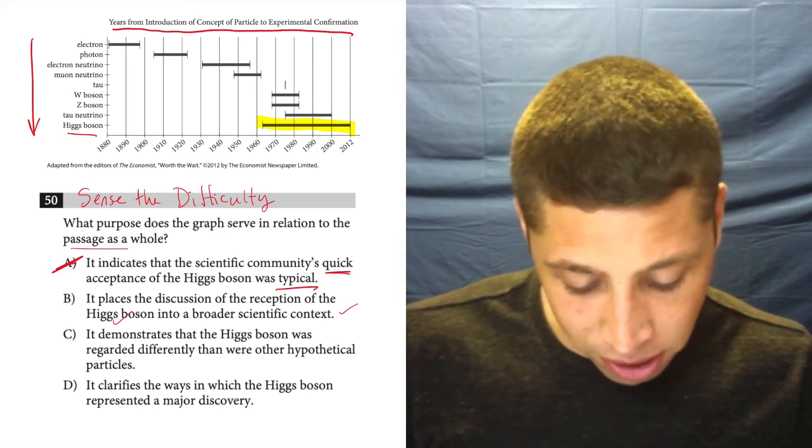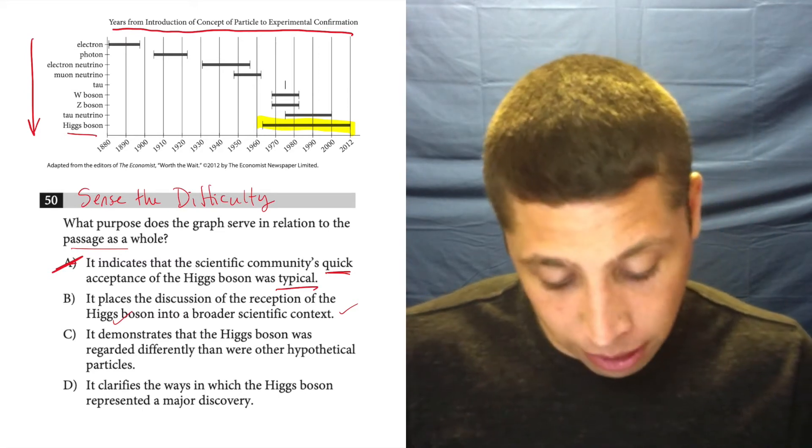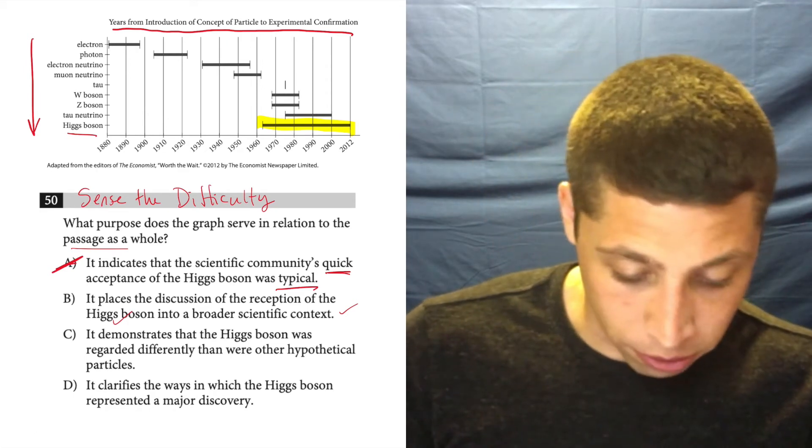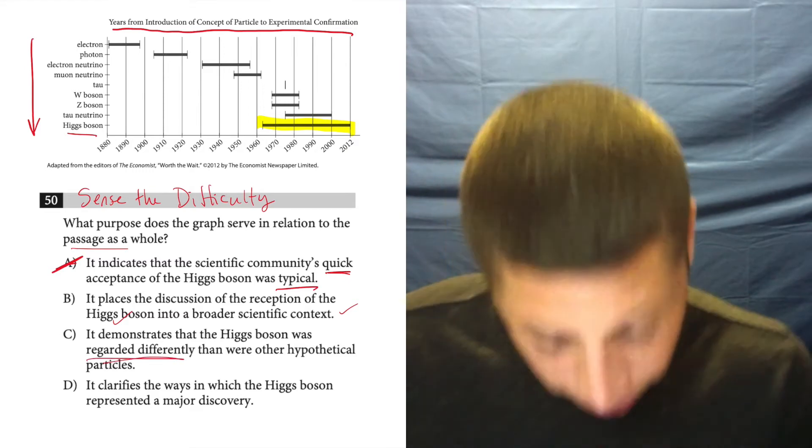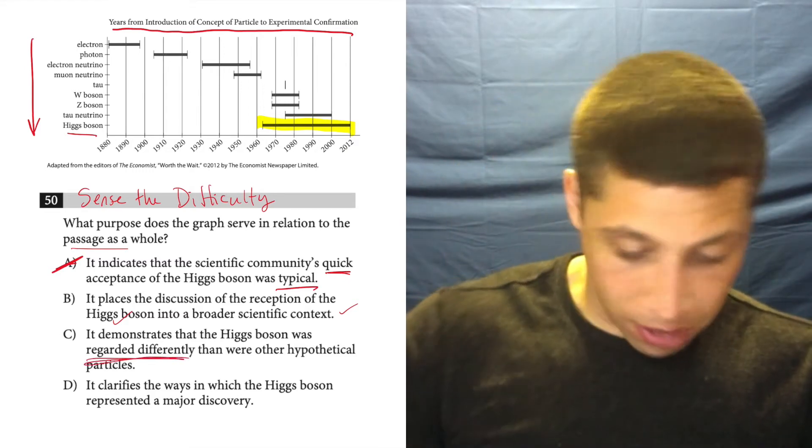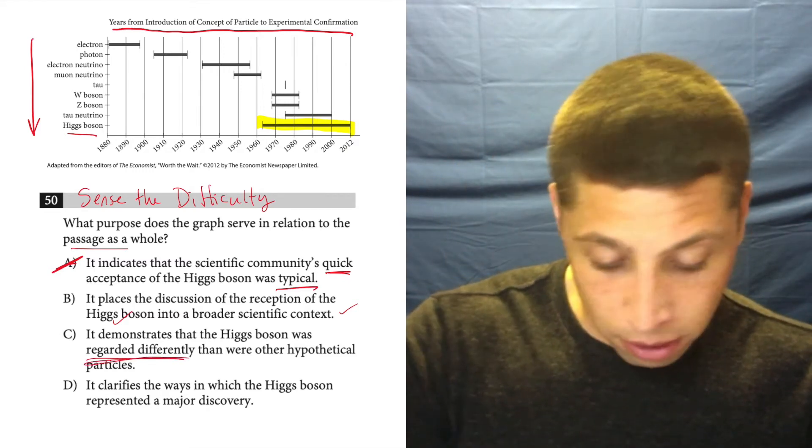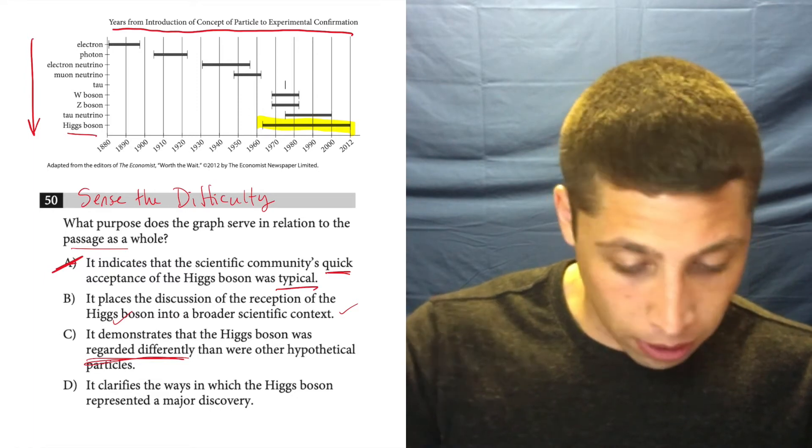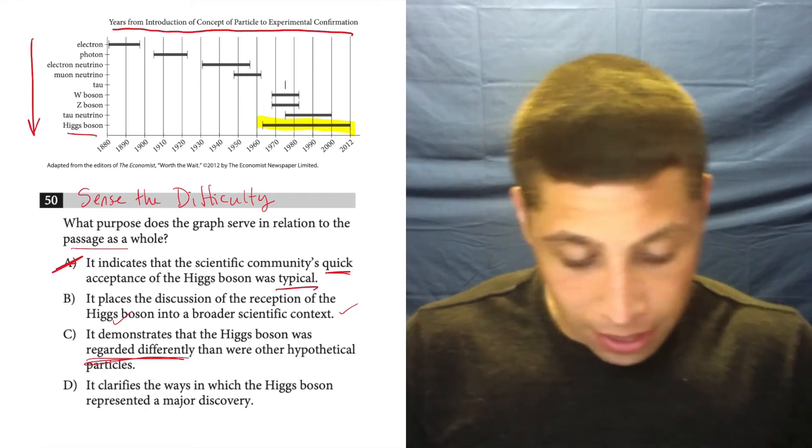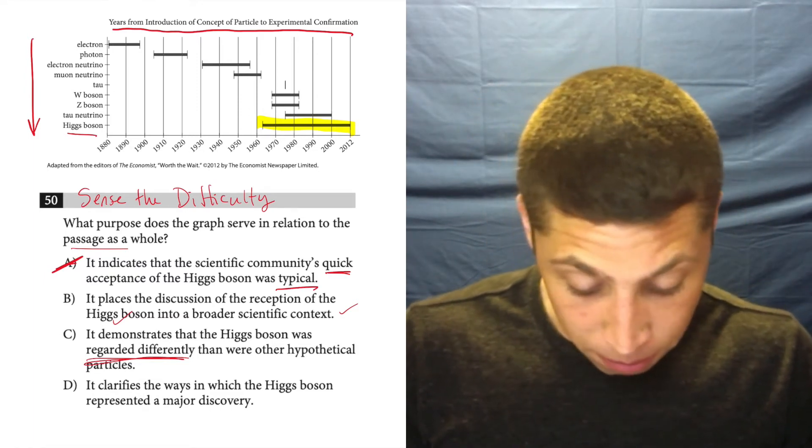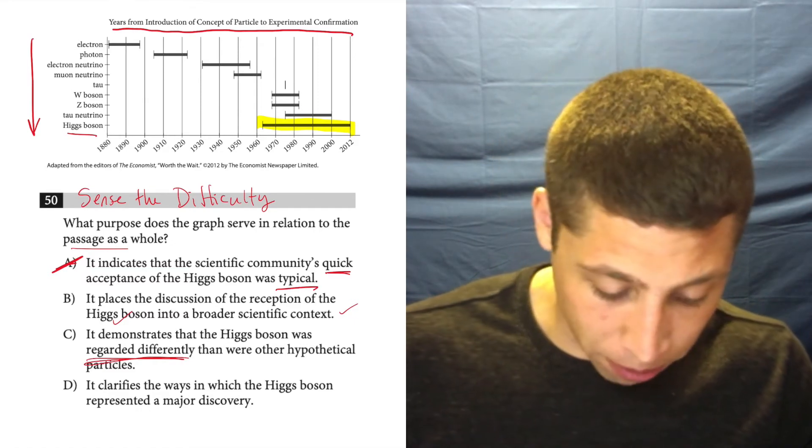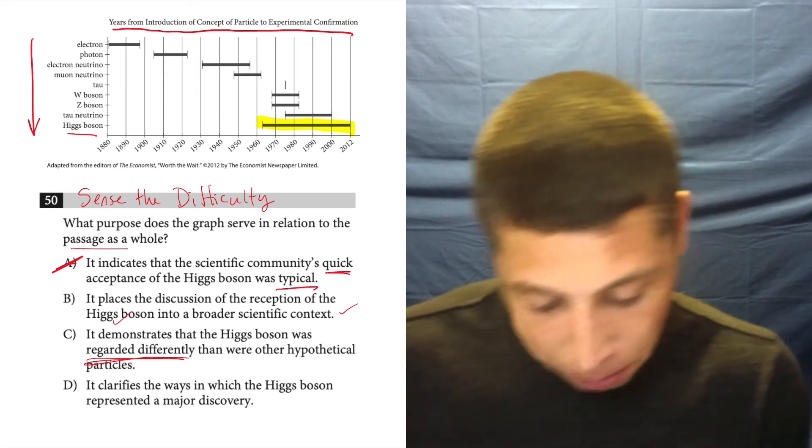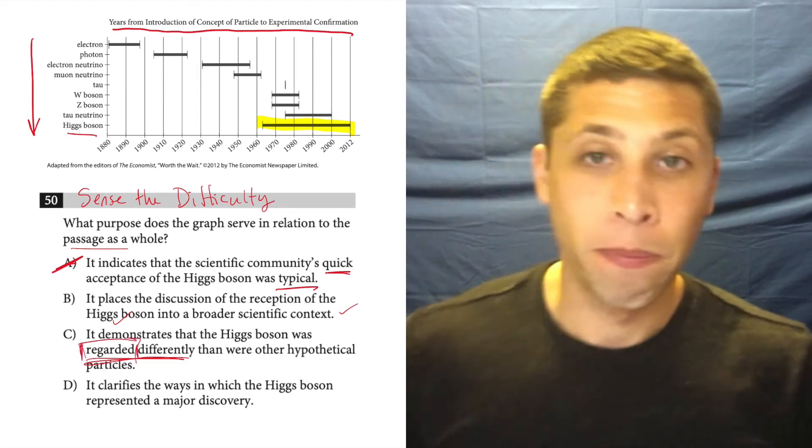C. It demonstrates that the Higgs boson was regarded differently than were other hypothetical particles. Well, I don't really get that here. What makes it regarded differently? I mean, it's got a line, they introduced it. It's longer maybe, but regarded differently? Well, here's the problem here. It's not even just the word different that bothers me. It's that word regarded.